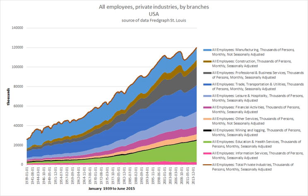Wage slavery. Wage labor, as institutionalized under today's market economic systems, has been criticized, especially by both mainstream socialists and anarcho-syndicalists, using the pejorative term wage slavery. Socialists draw parallels between the trade of labor as a commodity and slavery.